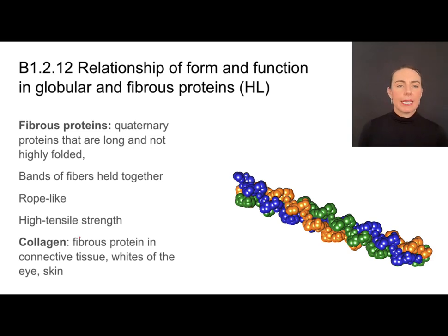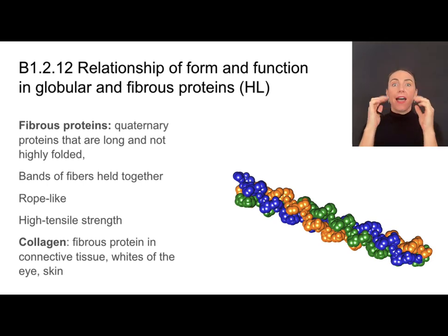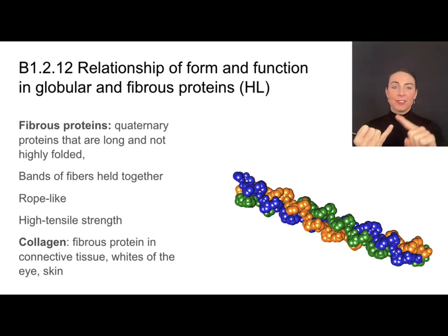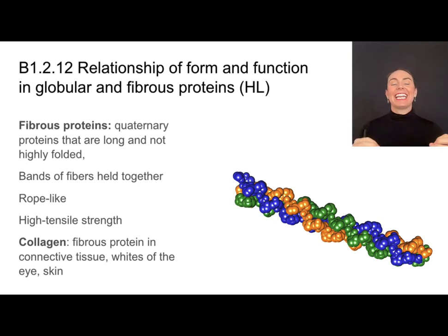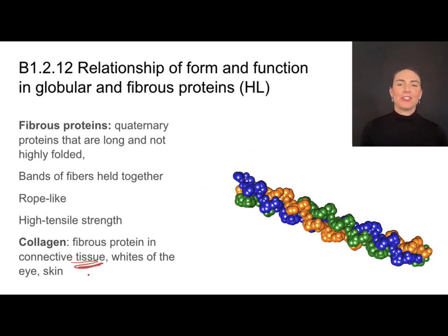A great example is collagen, the most abundant protein in our body. It makes up a lot of important connective tissue like our tendons, ligaments, the whites of our eyes, and a lot of our skin. It's non-soluble, long, and a very strong quaternary protein. Form and function — that makes it great for connective tissue that connects muscles to bones.